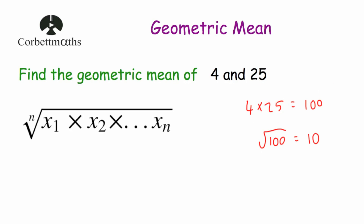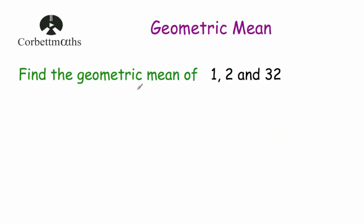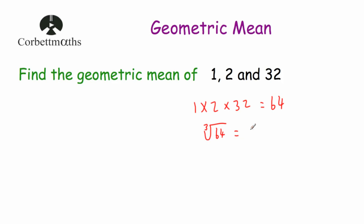Let's have a look at another question. Our next question says find the geometric mean of 1, 2 and 32. What we're going to do is multiply these numbers together, and because there are three of them, we're going to take the cube root. So 1 times 2 times 32: 1 times 2 is 2, times 32 is equal to 64. Then we take the cube root of 64, and the cube root of 64 is 4. So the geometric mean of 1, 2 and 32 is 4.